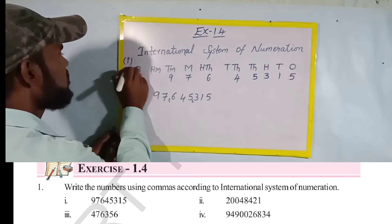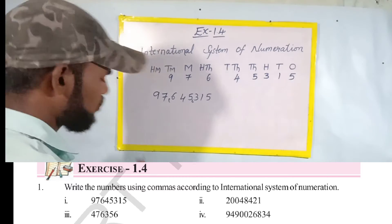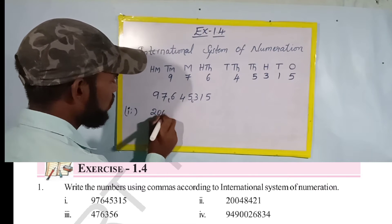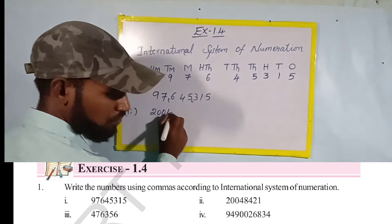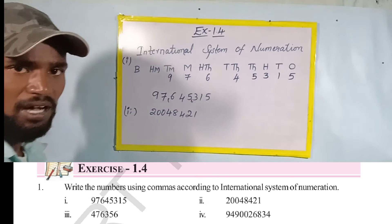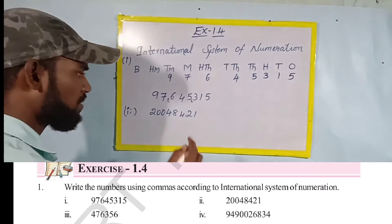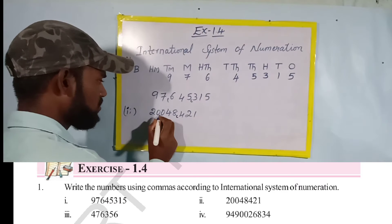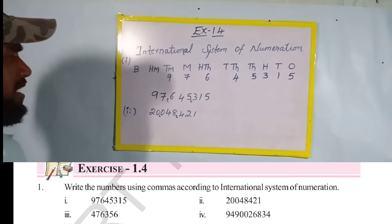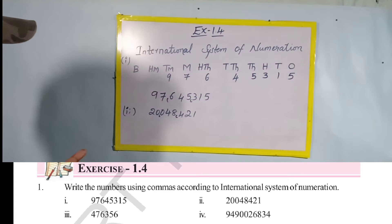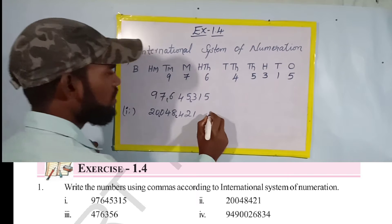That is the first answer. Next, let's move to the second question. The second number given is 200,484,21. Place the comma after every three digits from the right to left. So: twenty million, forty-eight thousand, four hundred and twenty-one.